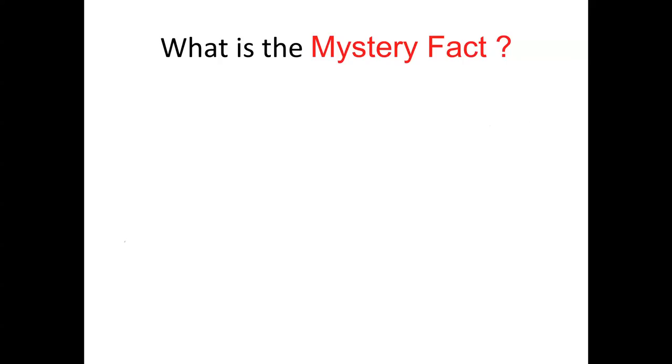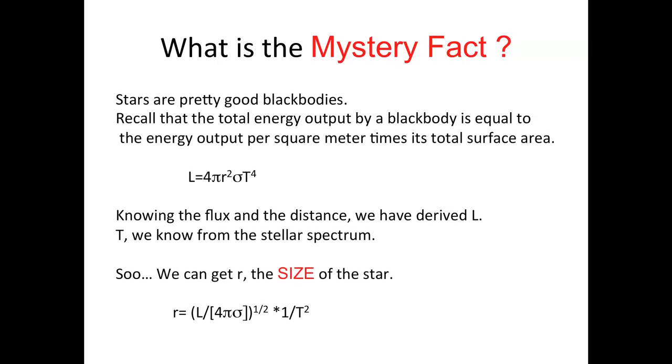And that mystery fact we get from using this effective temperature concept. Recall that the total energy put out by a blackbody of a given size is 4 pi r squared sigma t to the fourth. So, we've derived L, t we know from the stellar spectrum, so we can get the size of the star by switching this equation around in the other ways. In the case of the sun, we kind of derive the temperature since we knew the size and the luminosity. In this case, we derive the size because we measure the temperature from the spectrum and the luminosity by knowing the distance and the flux.